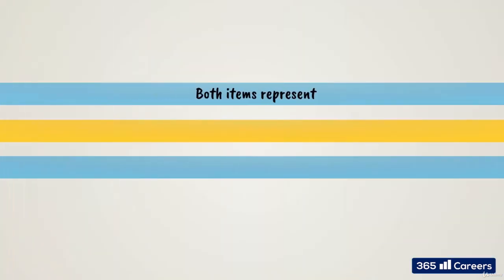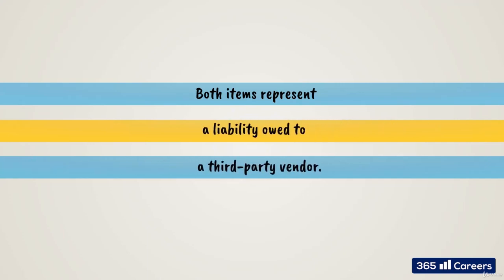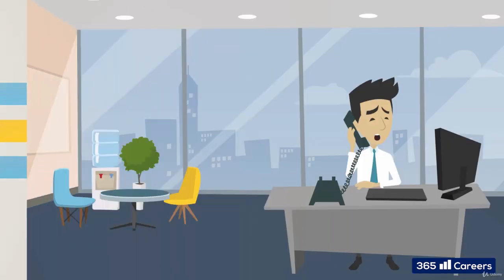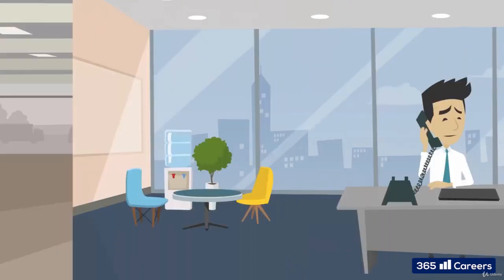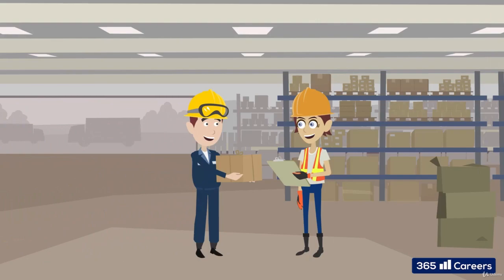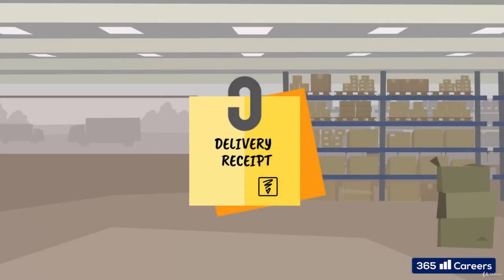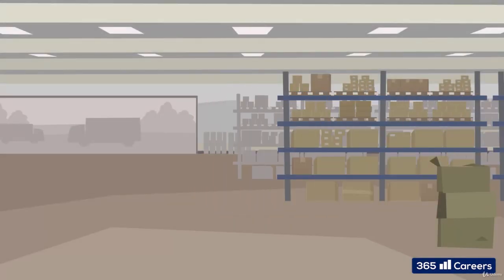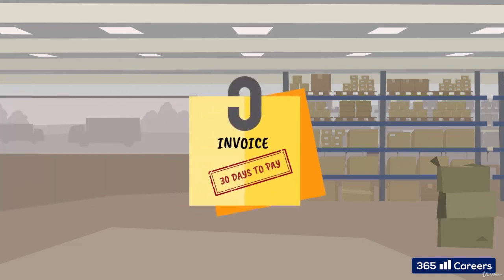Both items represent a liability owed to a third-party vendor. We register an accounts payable when our company calls a supplier and orders the delivery of a product. Then, once the product is delivered, we must sign a delivery receipt, and we'll receive an invoice that will state we must pay a specific amount.